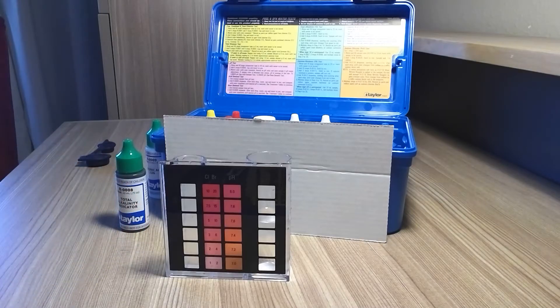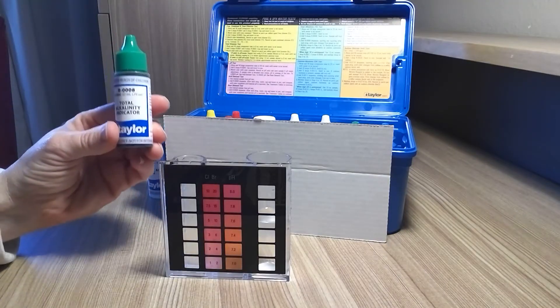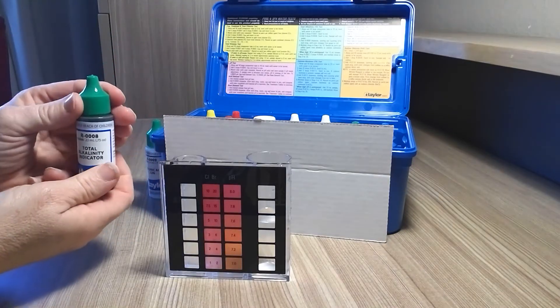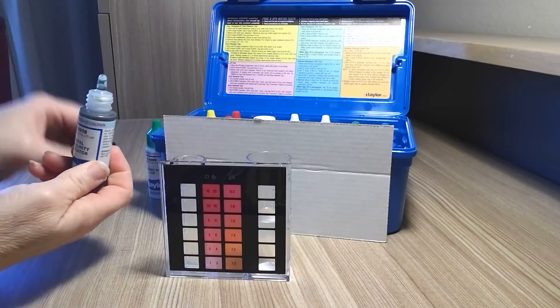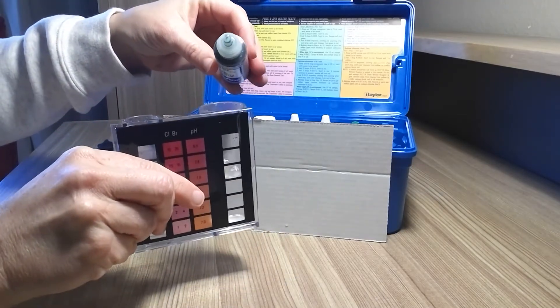And then we're going to add five drops of R008 and we're going to swirl to mix. This is going to make the sample turn to green.